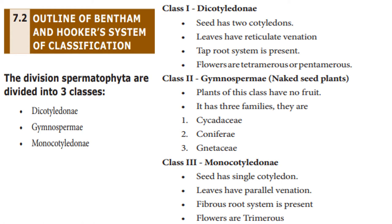Class 1: Dicotyledon. The seed has two cotyledons. Leaves have reticulate venation. Taproot system is present. Flowers are tetramerous or pentamerous.